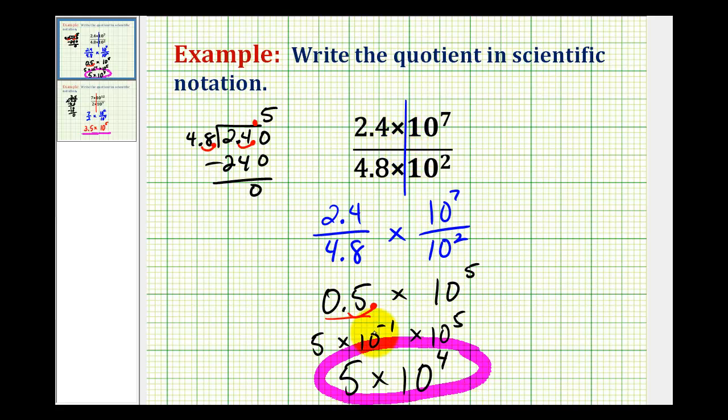So sometimes when we divide, we have this extra step where the significant or mantissa is not in the correct form for scientific notation.